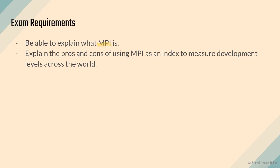For exam requirements, be able to explain and define what MPI is — the indicators and different aspects: education, health, and living standards. Also be able to explain the pros and cons of using MPI as a development indicator. For example, MPI may only be useful for comparing poverty within or amongst less developed nations, and may not be applicable globally.